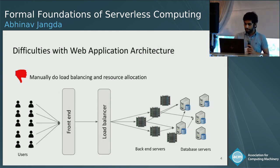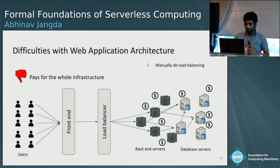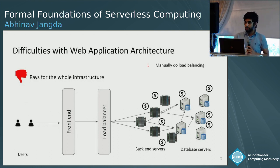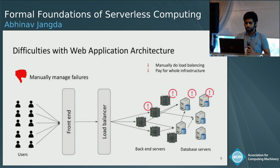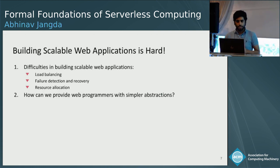With this distributed setting, web programmers have to deal with some difficulties. For example, they have to write code for load balancing and resource allocation. Once the number of requests increases, the load has to be balanced equally among all servers. And when you have paid for these resources, you have to pay for them even if the number of requests decreases in future. They also have to manage failures and write code for what happens if some servers fail. So building web applications is hard, with challenges like load balancing, resource allocation, and failure detection and recovery.